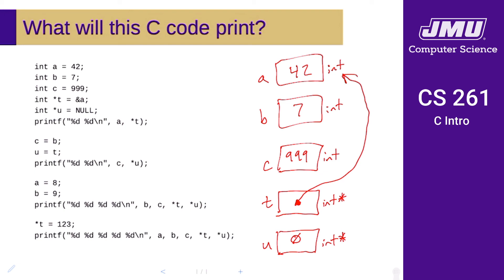This is what memory looks like after the first set of declarations. The line that prints a and *t: a is just going to be 42, and *t dereferences t — t is a pointer, we dereference it and take whatever value it's pointing to — so this is going to print 42 and 42.